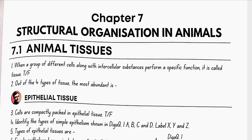Chapter 7: Structural Organization in Animals - Animal Tissues. When a group of differentiated cells along with intercellular substances perform a specific function, it is called a tissue.